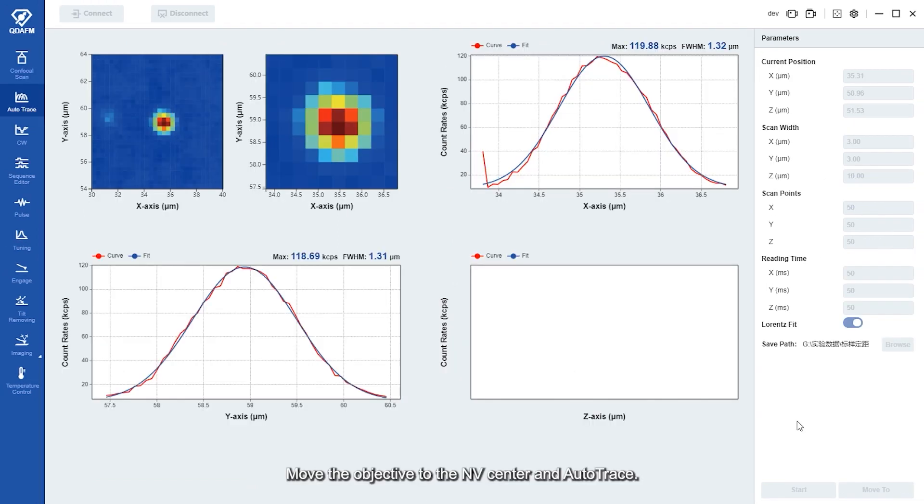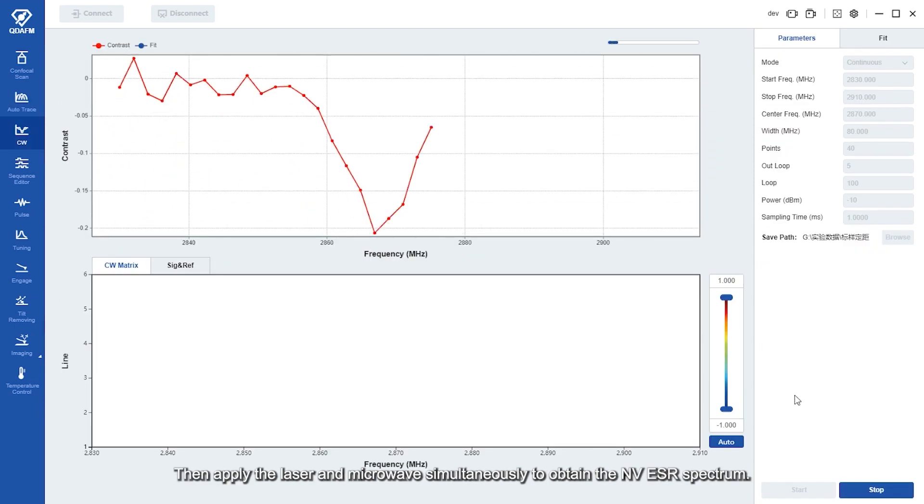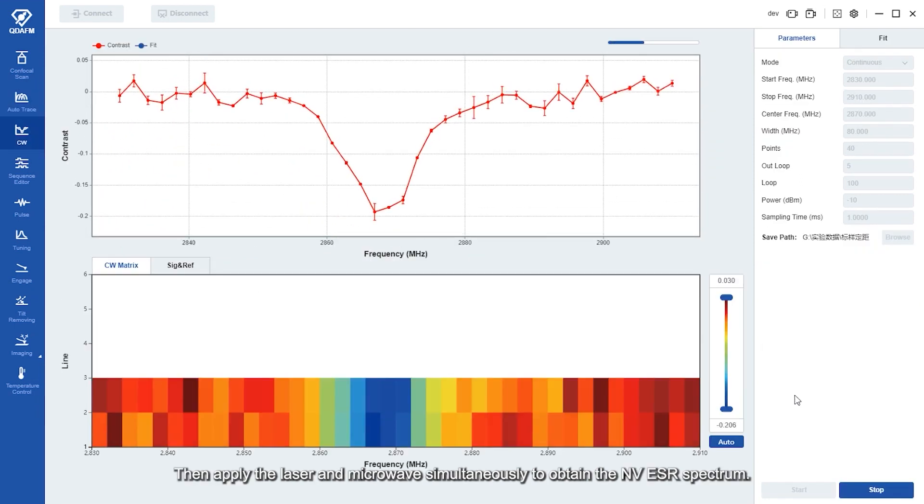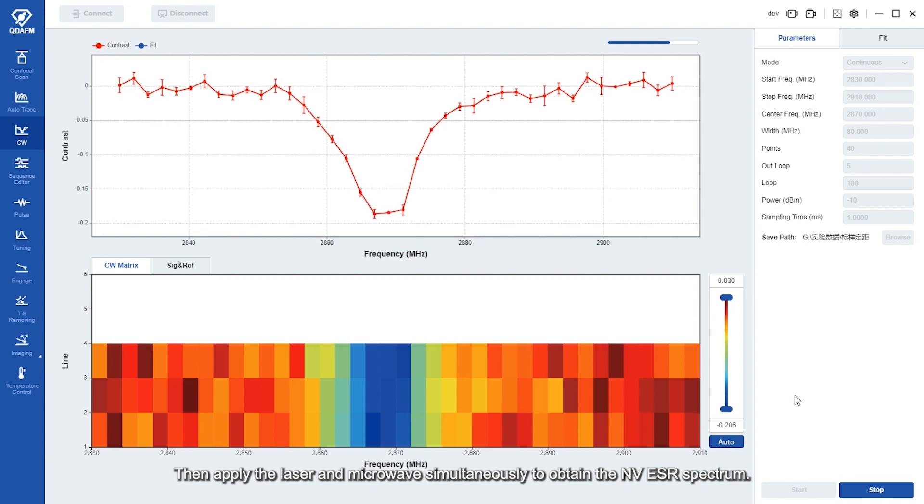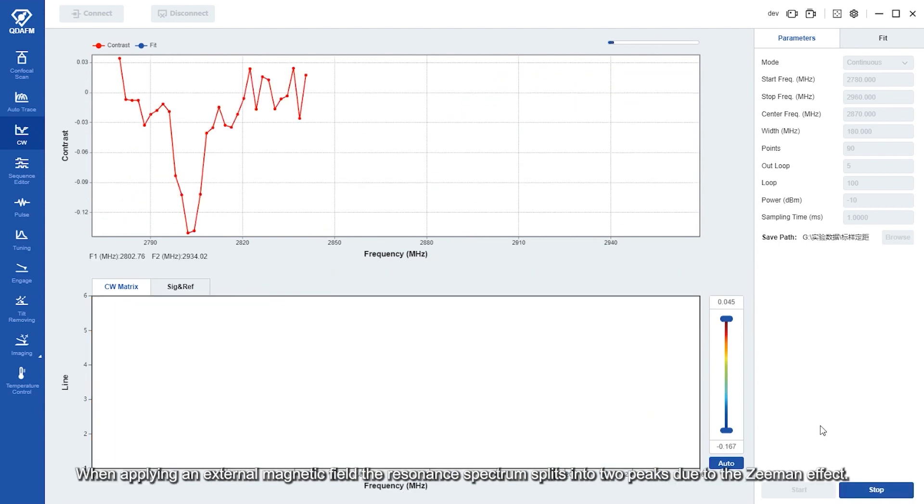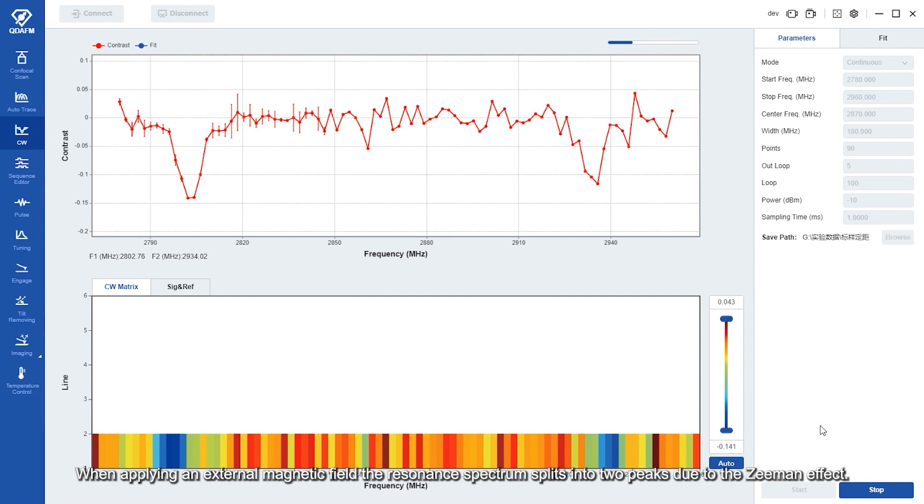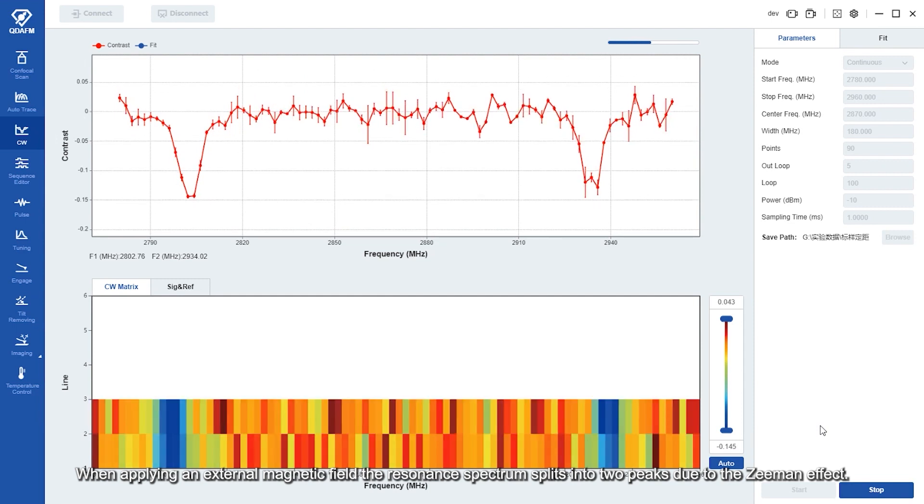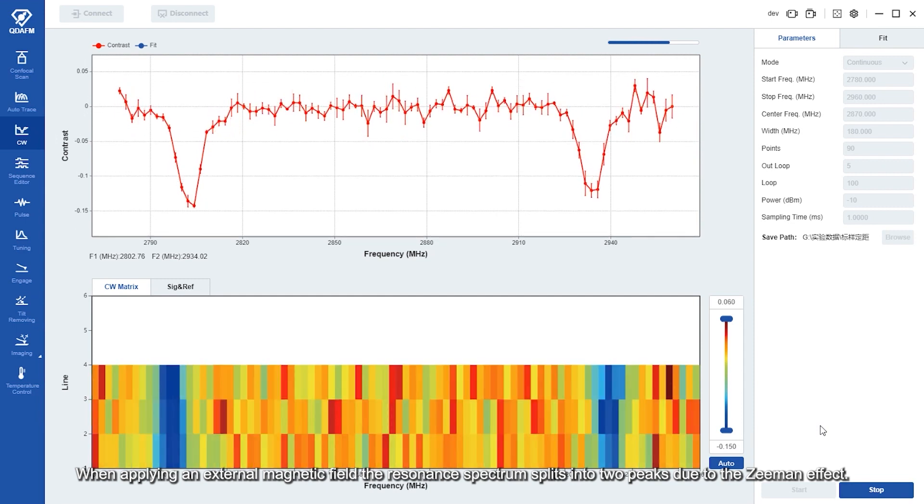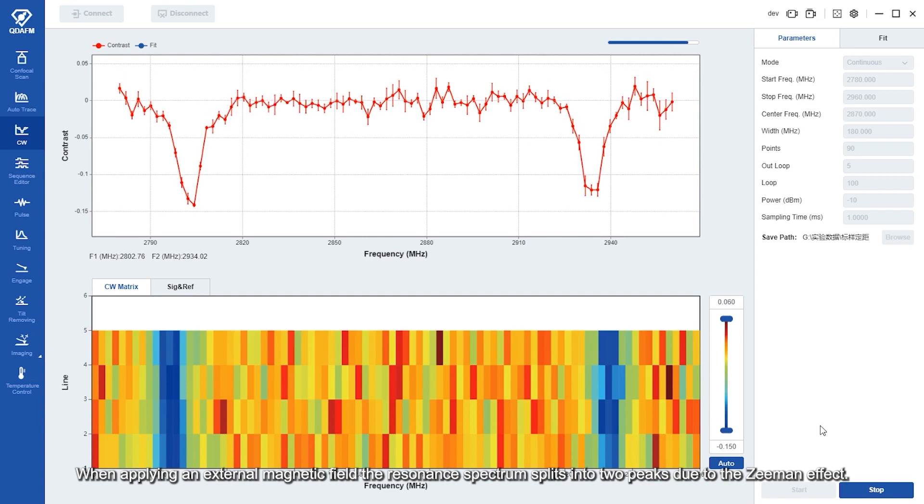Move the objective to the NV center and focus. Then apply the laser and the microwave simultaneously to obtain the NV ESR spectrum. When applying an external magnetic field, the resonance spectrum splits into two peaks due to the Zeeman effect.